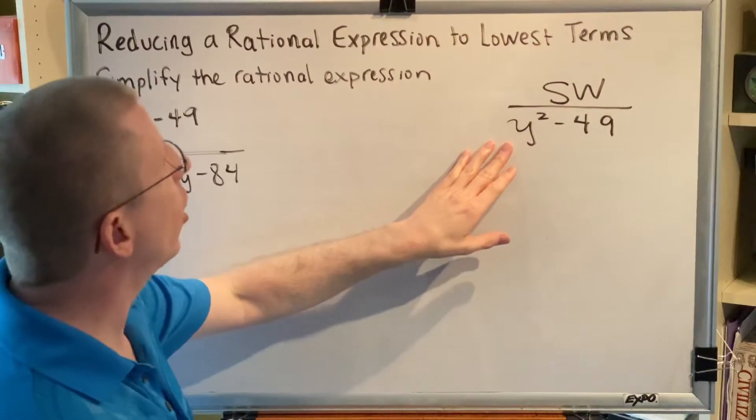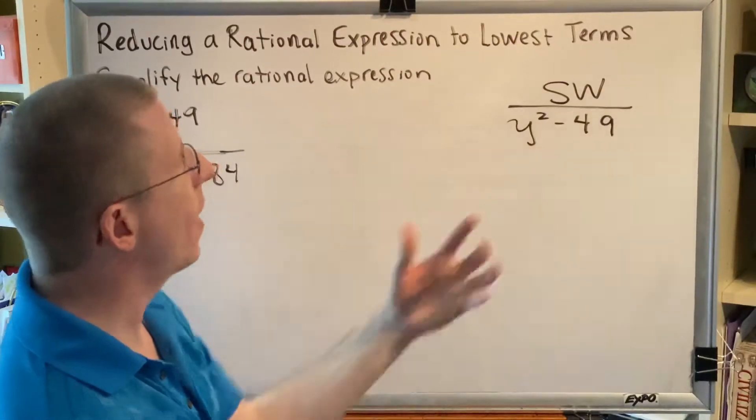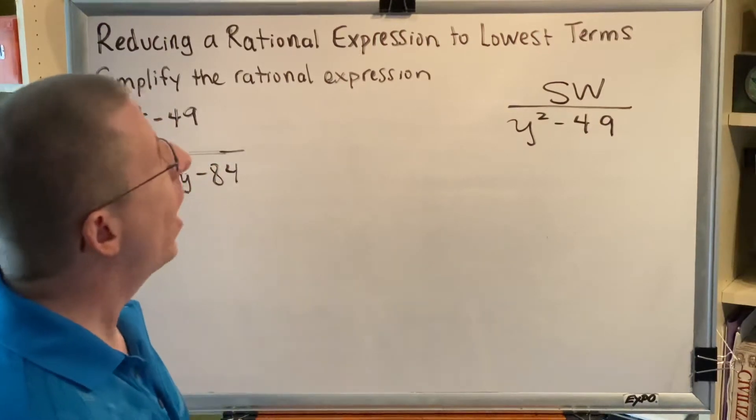Next is the greatest common factor. There is no greatest common factor here. y squared is a y times y. 49 is a 7 times 7. They have nothing in common. And then finally, the third step is to count our terms.